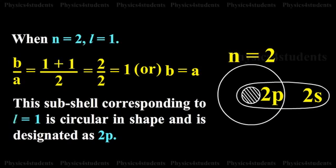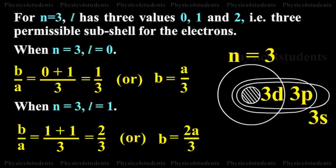For n = 3, the permissible l values are 0, 1, and 2. When n = 3 and l = 0, we get b = a/3, so the major and minor axes are not equal. This results in an elliptical shape, corresponding to the 3s subshell.